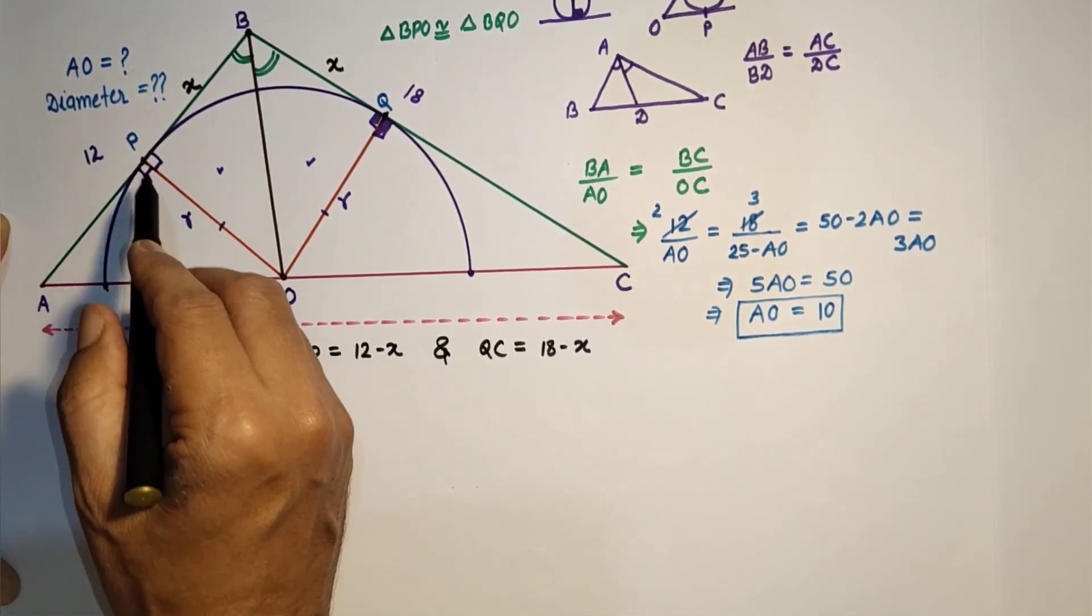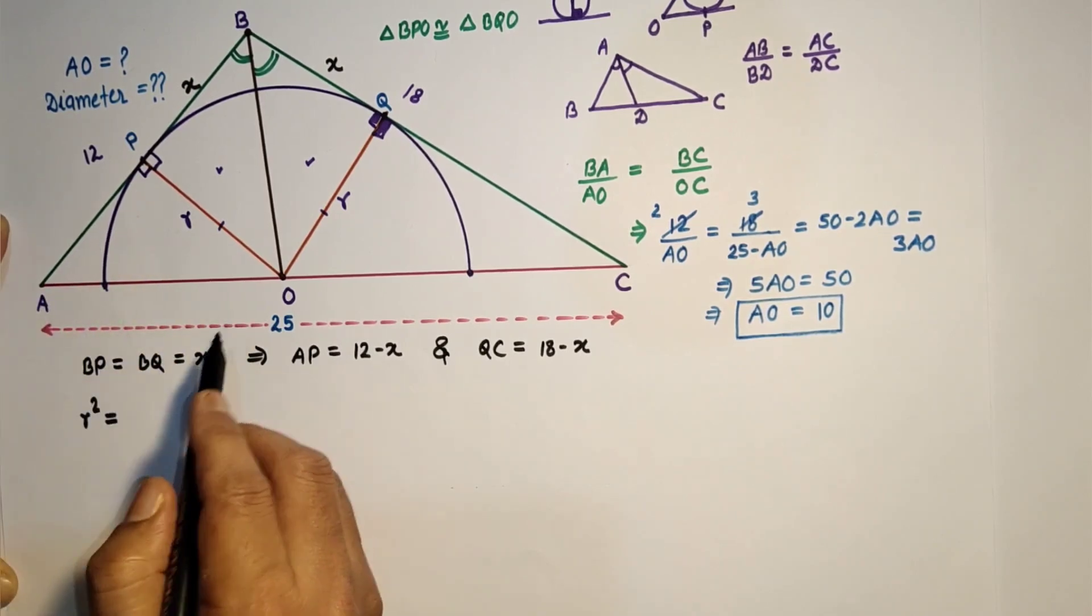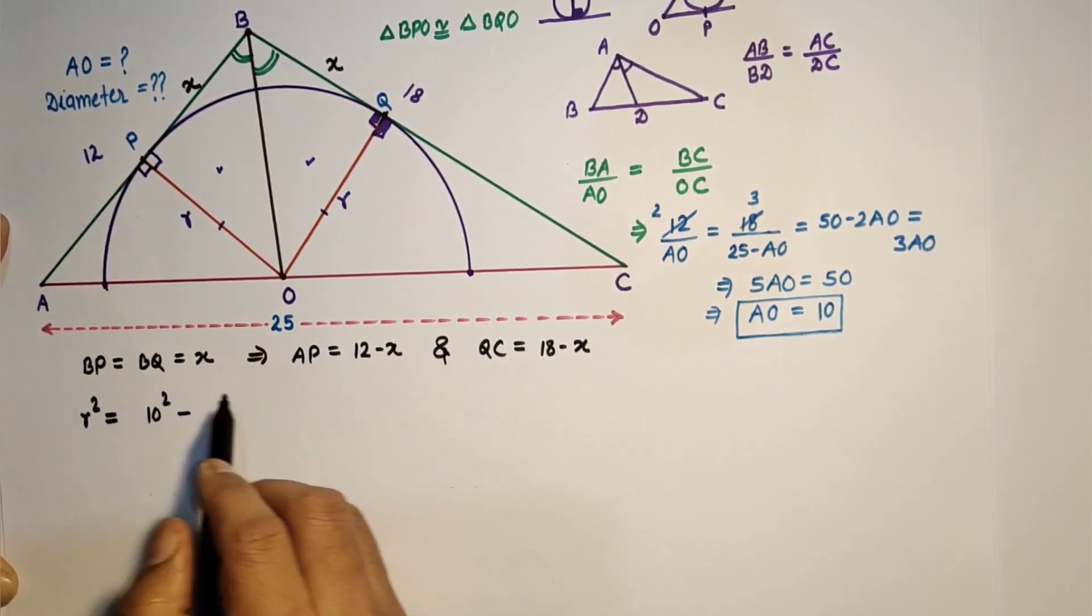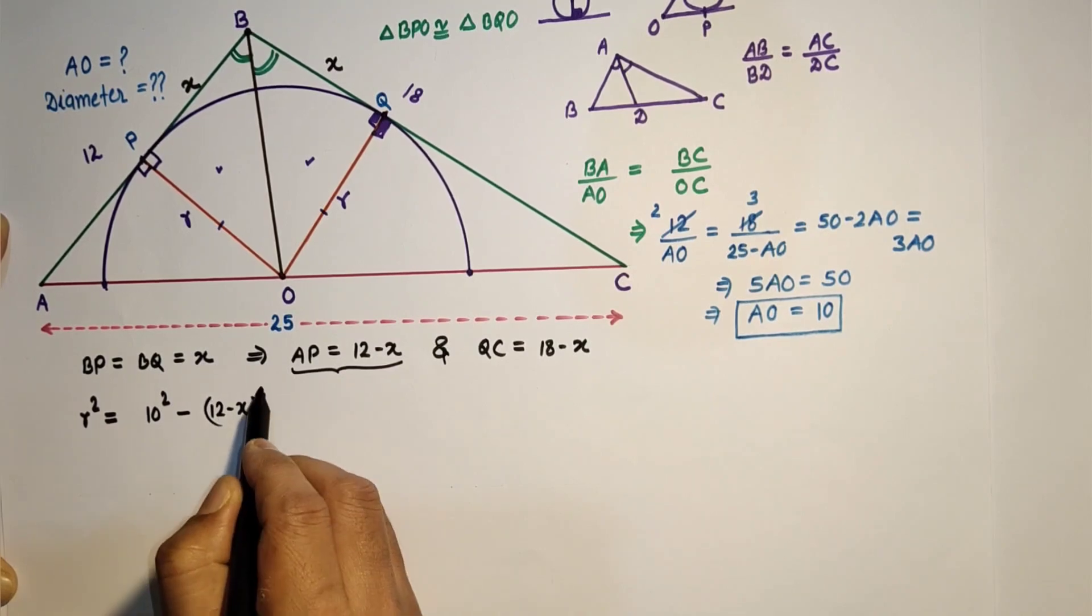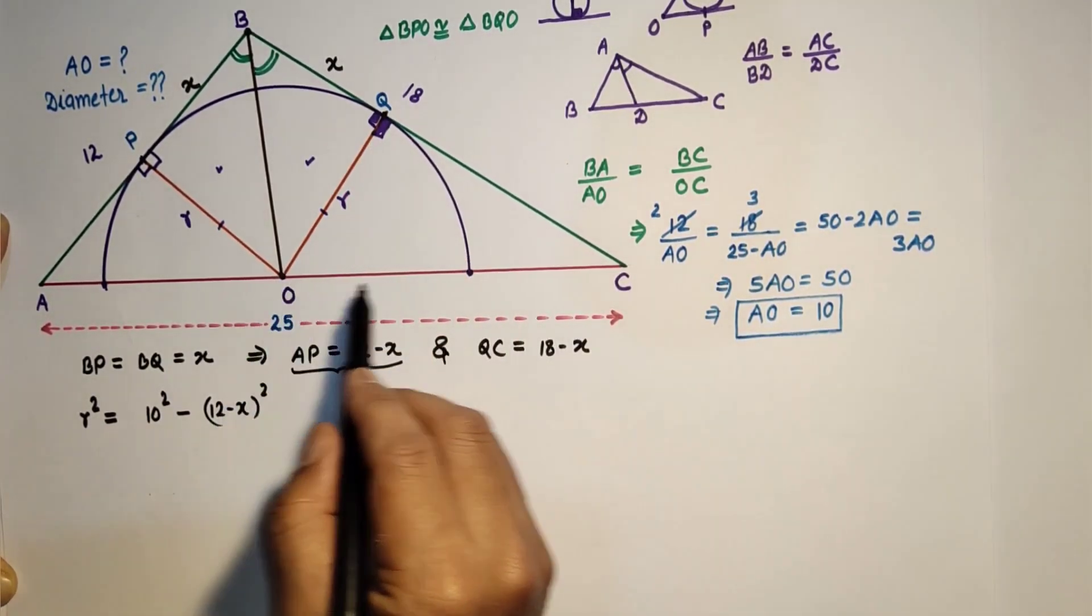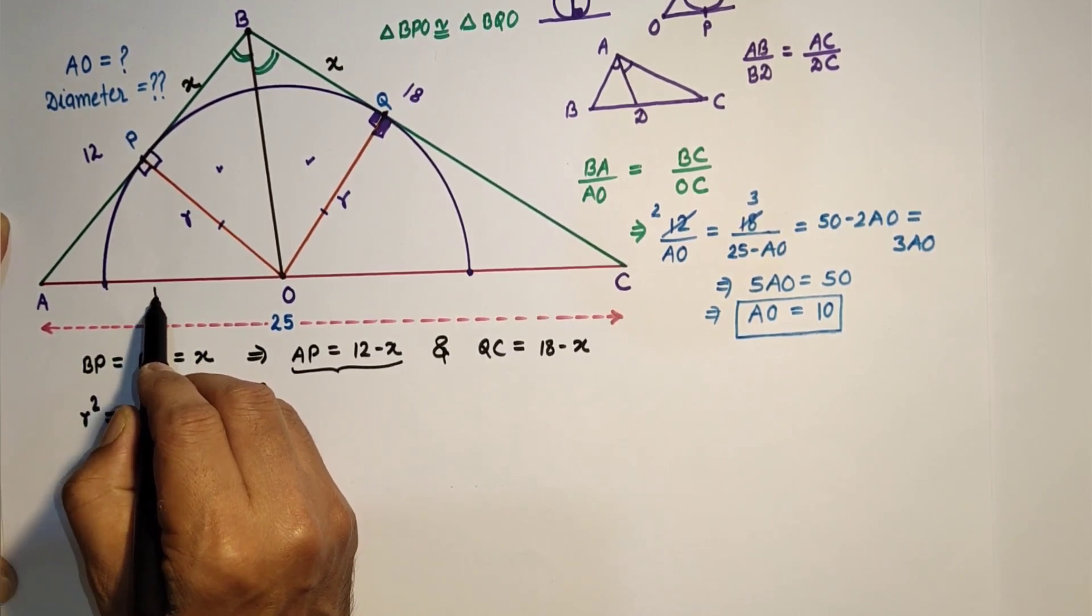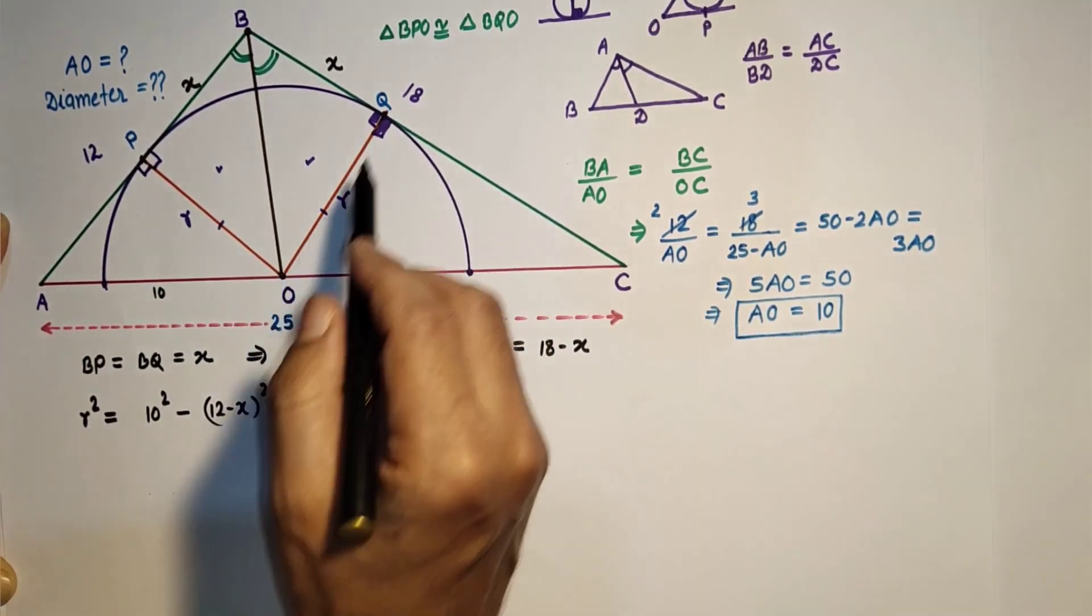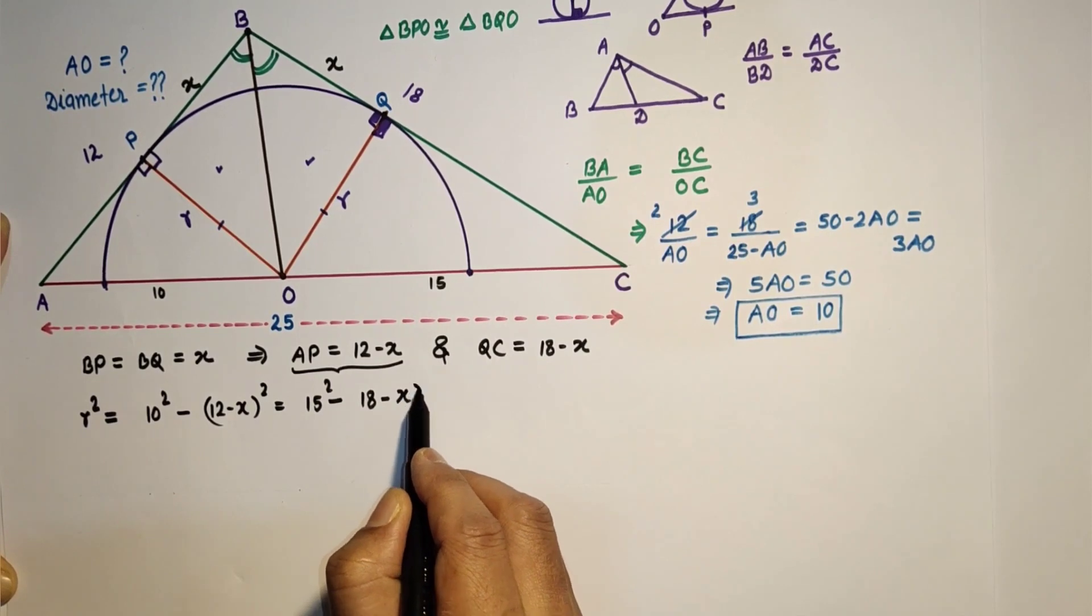So we have two right angle triangles APO and CQO. Using Pythagorean theorem in these two triangles, R² is equal to AO², and we found AO as 10, so 10² minus AP², AP is 12 minus X the whole square. But the same R² is equal to this OC² minus QC², which is 15² minus (18 minus X)².